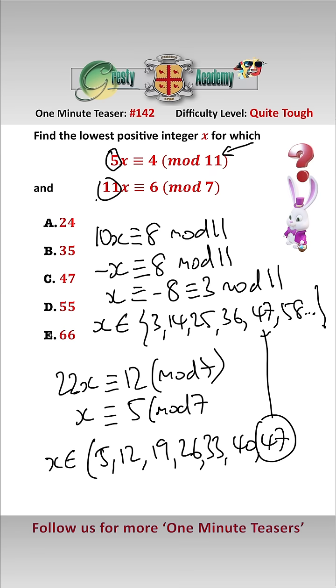And finally we have a number which is in both sets, and so therefore that must be the answer 47, answer C.